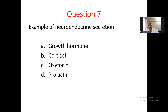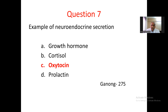Question number 7. Example of neuroendocrine secretion: A. Growth hormone, B. Cortisol, C. Oxytocin, D. Prolactin. Growth hormone, cortisol, and prolactin are released due to stimulation by hormones. Oxytocin is synthesized in the hypothalamus and released in the neurohypophysis through the hypothalamo-hypophysial set of neurons. So oxytocin is the correct response — it is the neuroendocrine secretion.